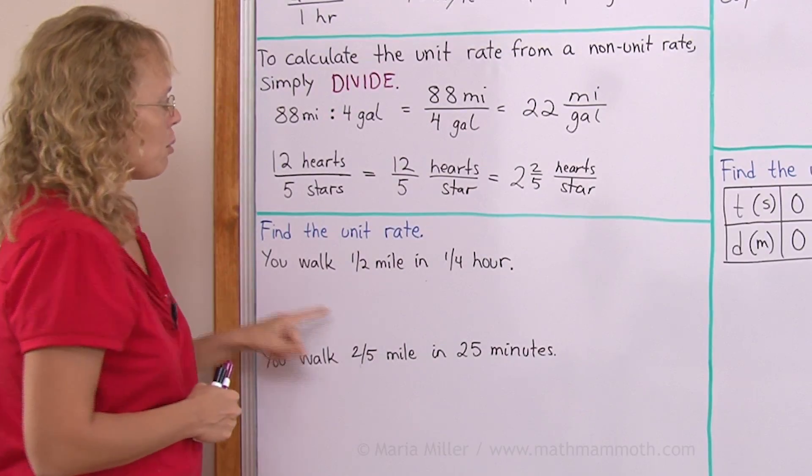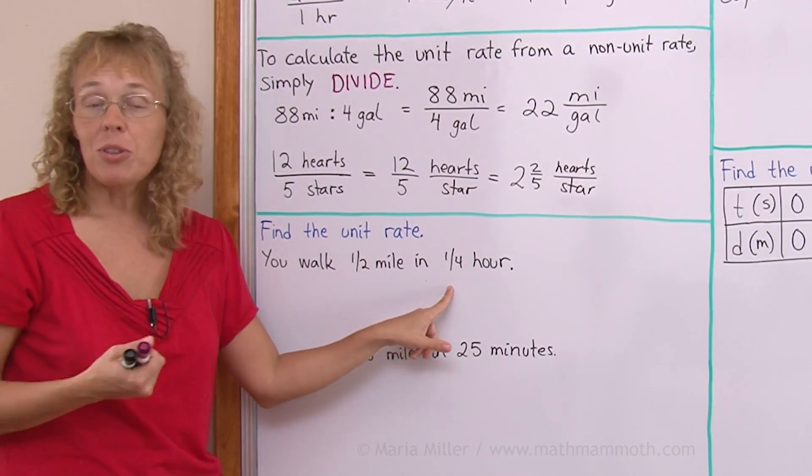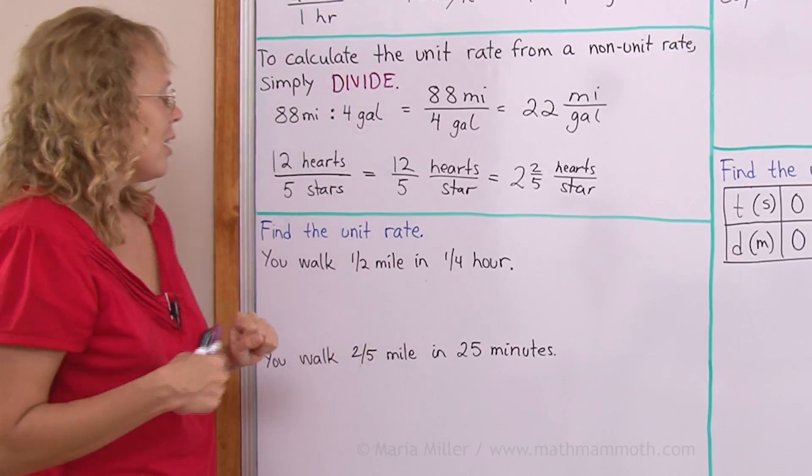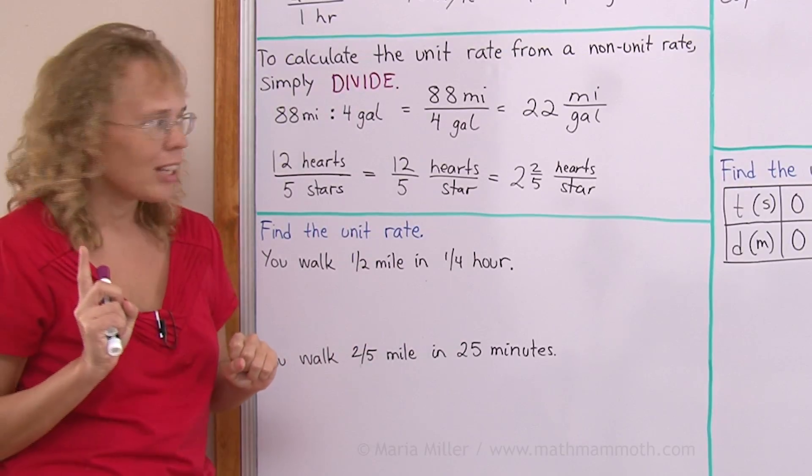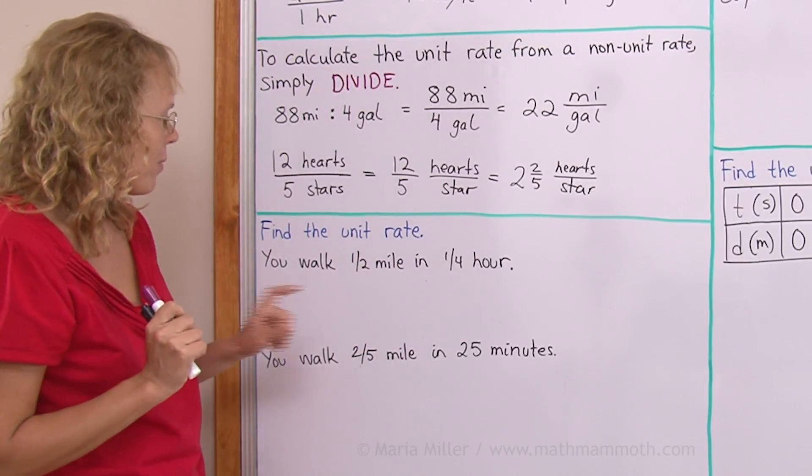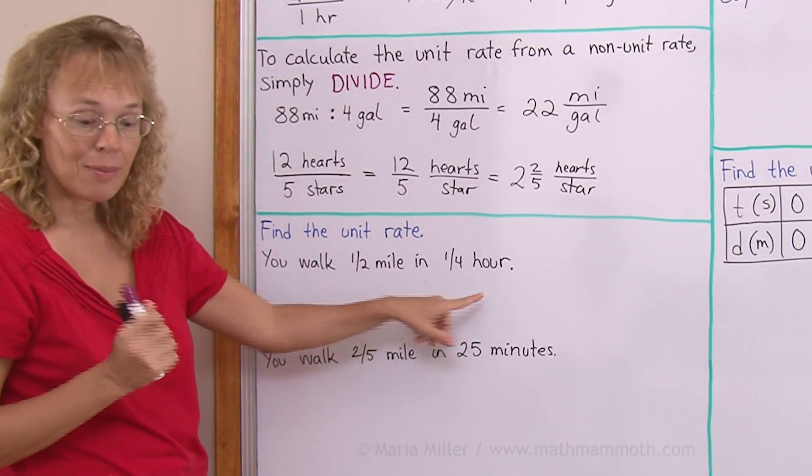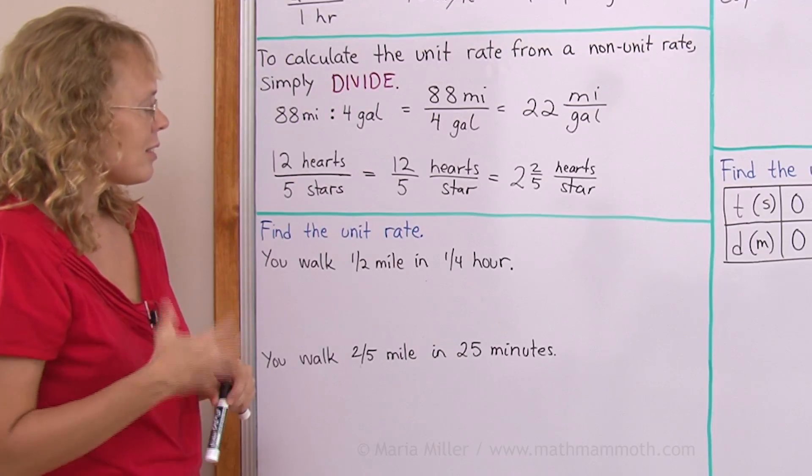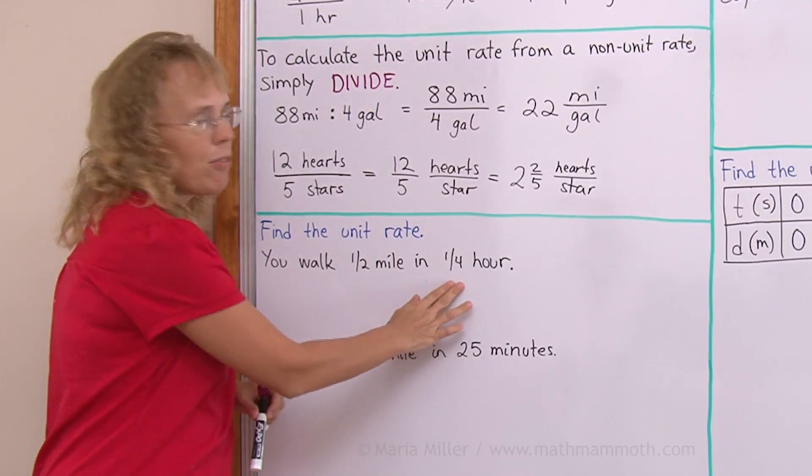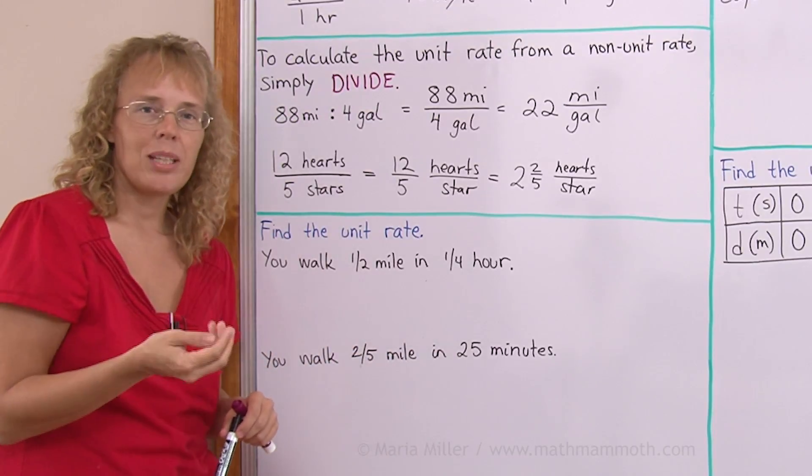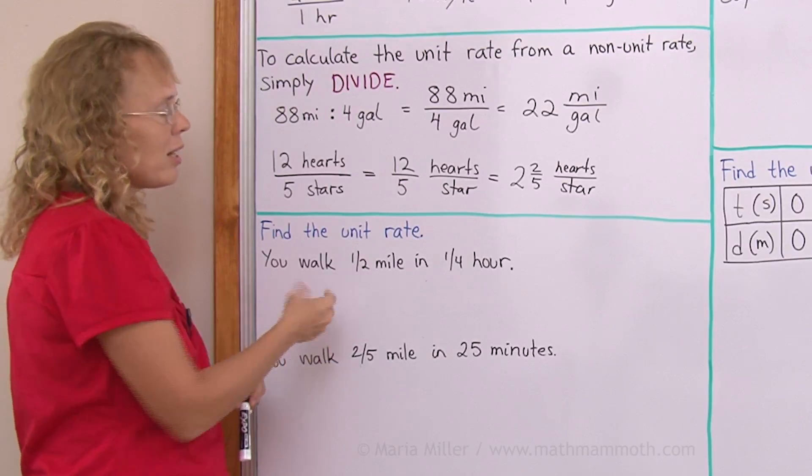Find the unit rate here. You walk half a mile in one fourth of an hour. Since we want the unit rate, we are looking for how many miles in one hour. And this is one fourth of an hour. It's 15 minutes. If you walk half a mile in 15 minutes,